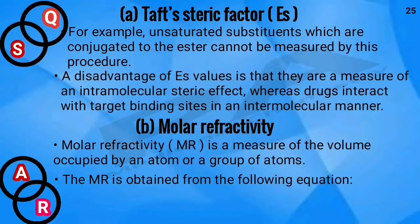For example, unsaturated substituents which are conjugated to the ester cannot be measured by this method. A main disadvantage is that Es is a measure of intramolecular steric effect, whereas drugs interact with the target binding sites in an intermolecular manner.